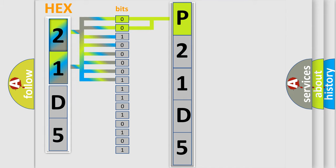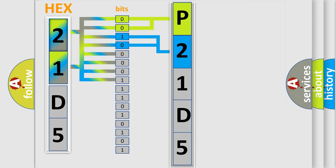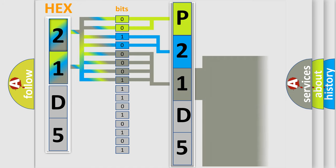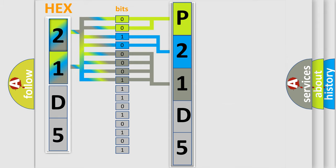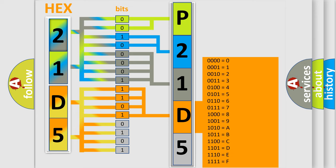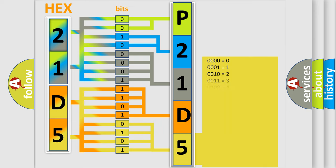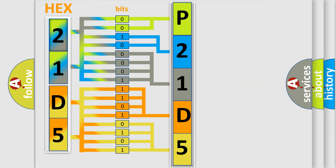The next two bits determine the second character. The last bits of the first byte define the third character of the code. The second byte is composed of a combination of eight bits. The first four bits determine the fourth character, and the combination of the last four bits defines the fifth character. A single byte conceals 256 possible combinations.